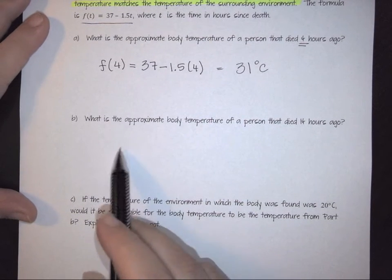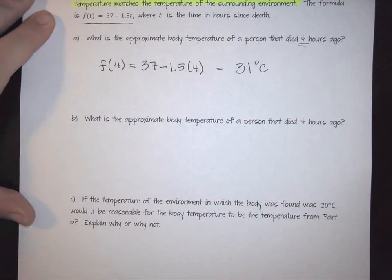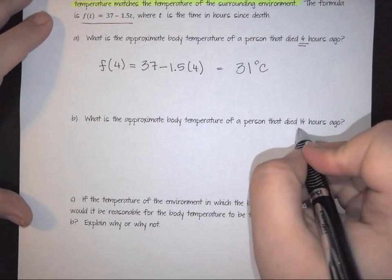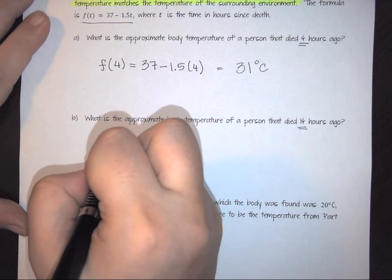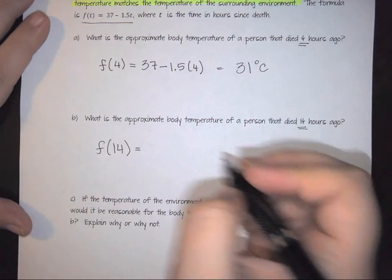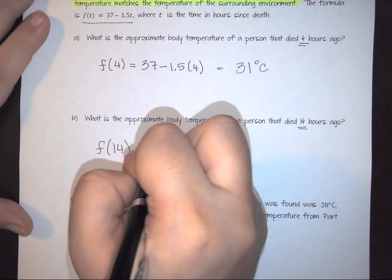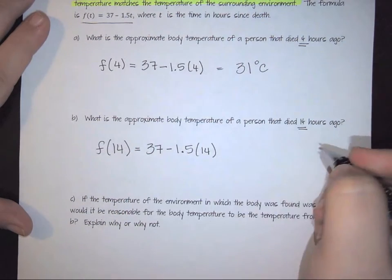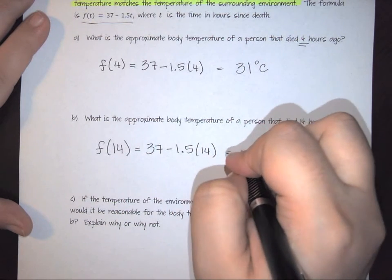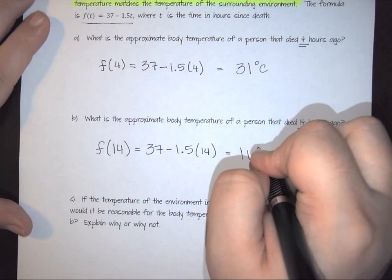Now the next one says what is the approximate body temperature of a person that died 14 hours ago? Again, same idea. Now we're going to use f(14), so here we're still going to have 37 minus 1.5 times 14, and this is going to give you 16 degrees Celsius.